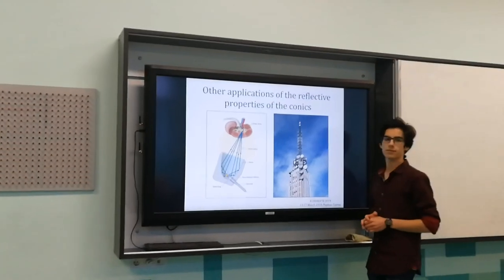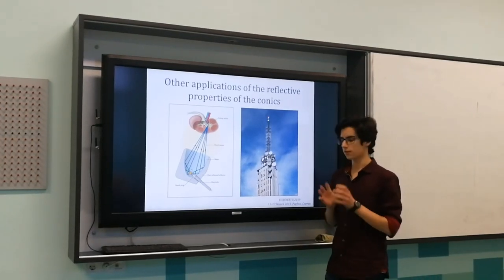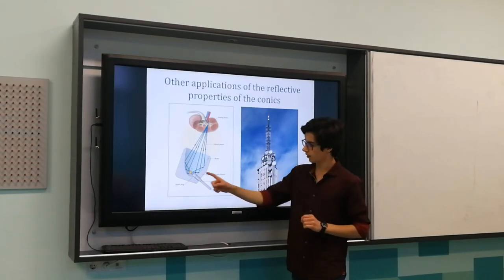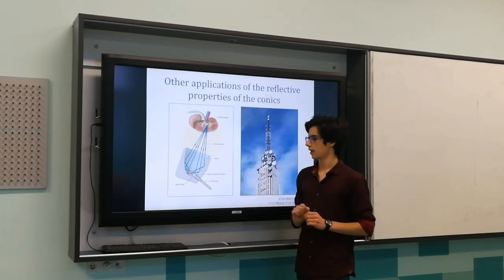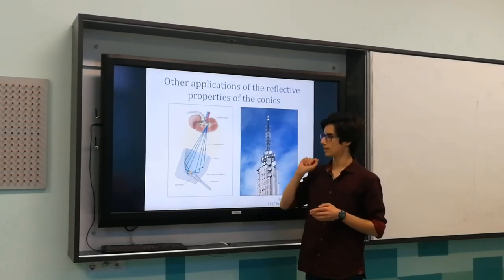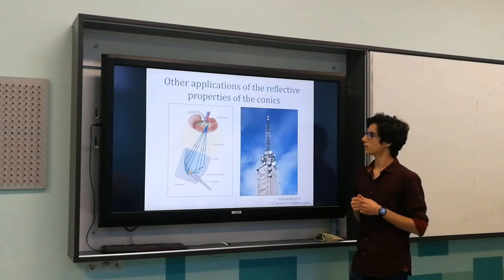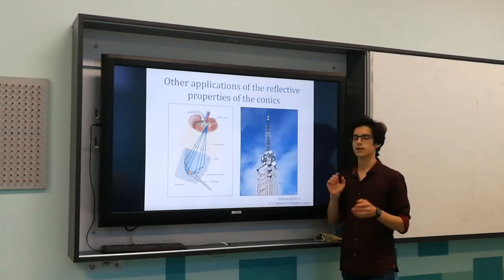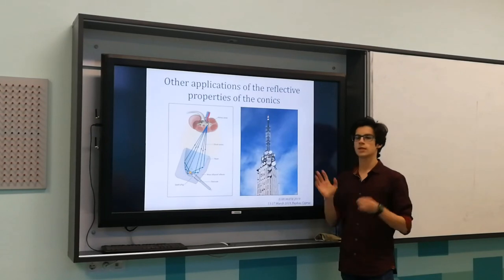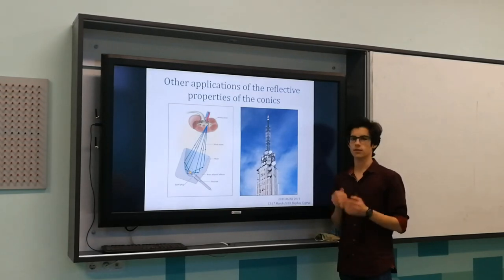There are many more applications of the reflective properties of the conics. For instance, the device used for breaking kidney stones has the shape of a rotational ellipsoid. In one of its foci, a source of shock waves is placed. Then a large amount of those waves reflects off the device and converges into the outer focus, where the kidney stone is situated. In that way, the stone is easily broken and passed by the body. We can find another use of the reflective properties in telecommunications. The dish on a satellite has the shape of a rotational paraboloid. In its focus, a receiver is placed. This allows even a weak signal to reflect off the dish, converging at its focus, and in that way it becomes stronger and is successfully received.